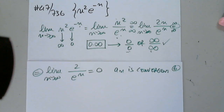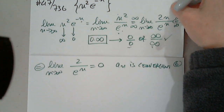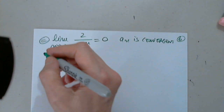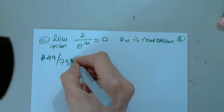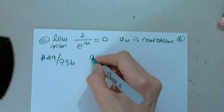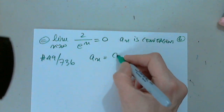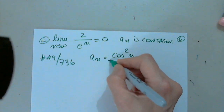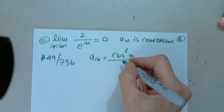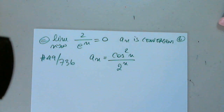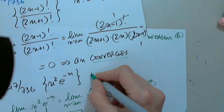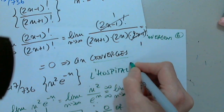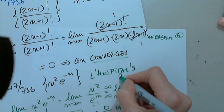That was 47. Let's take a look at 49 on the same page 736. We have a sub n equals cosine squared n divided by 2 to the n. So maybe I should mention here again, this involves L'Hôpital's rule, which is in chapter 4 of calc 1.